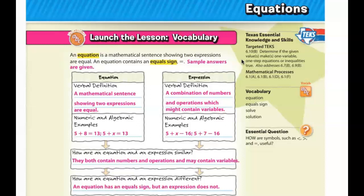Important words that we need to understand are equation, expression, equal sign, solve, and solution. First, let's talk about equation. It's a mathematical sentence showing two expressions that are equal. An equation contains an equal sign. So this is important.